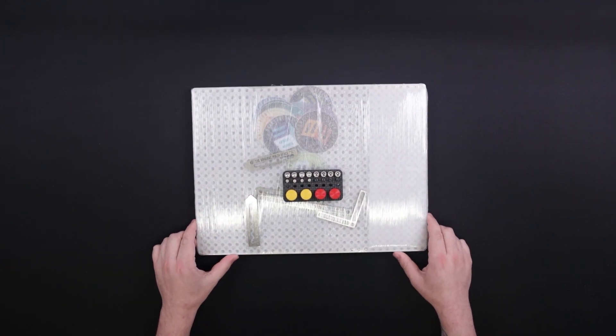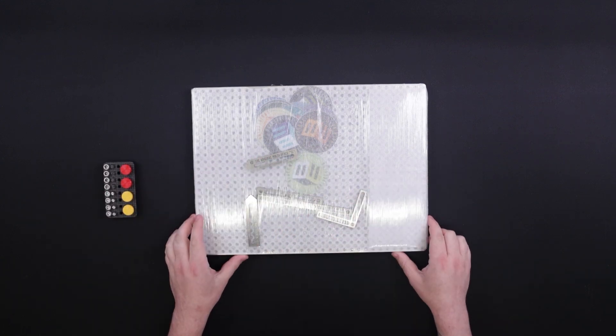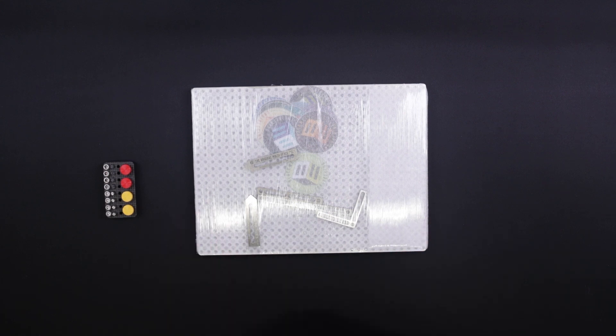I'm just going to go ahead and set that down here. We have a couple things. We'll take a look at this in a second, but this is the main package. Right off the bat, we've got a really nice fixture plate in here. Really excited to get it unboxed. So we're just going to go ahead and cut this open right away and take a look at what's inside.